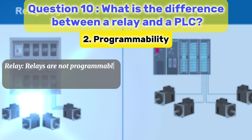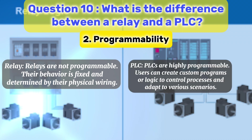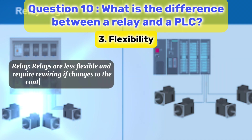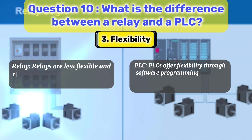2. Programmability. Relay: Relays are not programmable. Their behavior is fixed and determined by their physical wiring. PLC: PLCs are highly programmable. Users can create custom programs or logic to control processes and adapt to various scenarios. 3. Flexibility. Relay: Relays are less flexible and require rewiring if changes to the control logic are needed. PLC: PLCs offer flexibility through software programming, allowing quick and easy modifications to control strategies without rewiring.